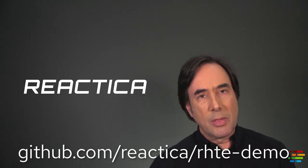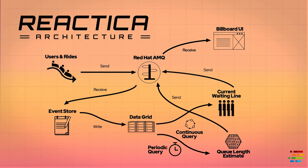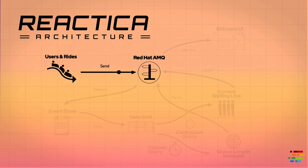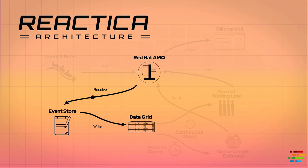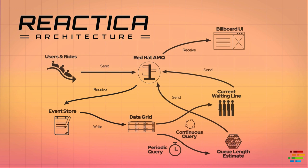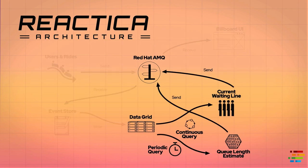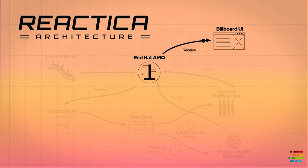We'll discuss everything in terms of this diagram. There are five components. In the upper left, there's the component that generates user and ride objects. The new objects are sent as events to the AMQ broker. In the lower left, there's the event store component that takes data from AMQ and stores it in the data grid. In the lower right are the queue length estimate and current waiting line components, which consume data from the data grid and generate the data consumed by the billboard UI component in the upper right.